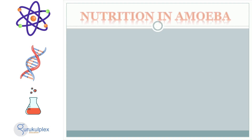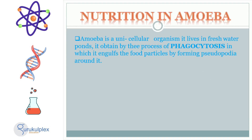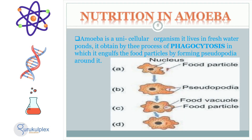Amoeba is a single-celled organism that resides in freshwater ponds. It obtains its nutrition through phagocytosis, which is when the amoeba extends pseudopodia around a food particle to envelope it and take it in. This is an extremely efficient method for the amoeba as it does not have to exert energy breaking down the food particle into smaller parts for digestion.